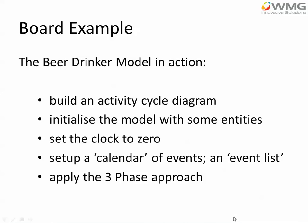Before we can simulate, we need to set a model up with the necessary entities that are going to be simulated. In this case we're going to use an activity cycle diagram and the entities will appear as simple tokens. In a computer program they are small data records. We also need to set the clock up to zero and set up an event list into which we can record future events.